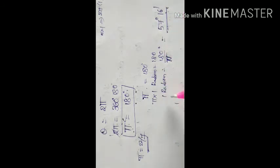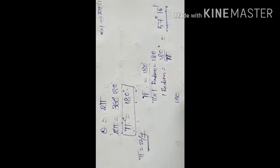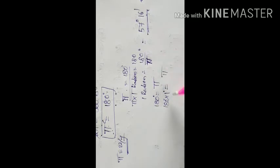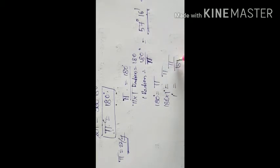Now let us see how to convert degrees into radians with examples. Since 180 degrees = π radians, 1 degree = π/180 radians. So 30 degrees = 30 × π/180 = π/6 radians.